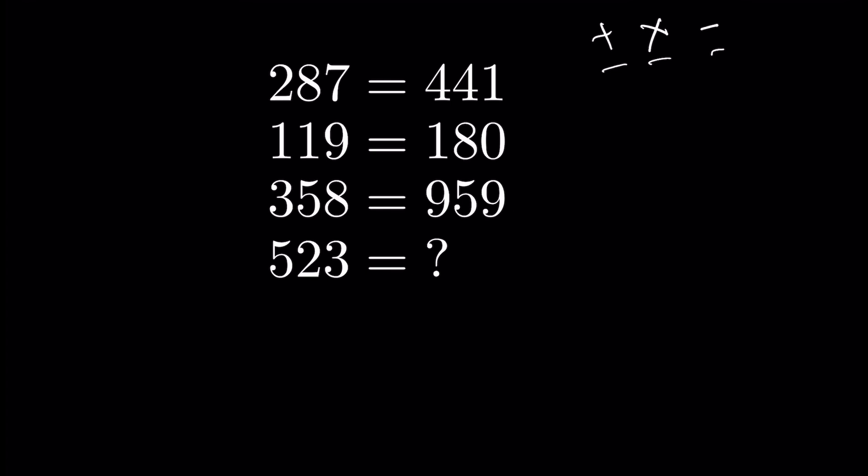But if we notice here, 4 is the square of 2. 2 squared is 4. But the next digit, 4, where did it come from? Again in the second number also, square of 1 is 1.